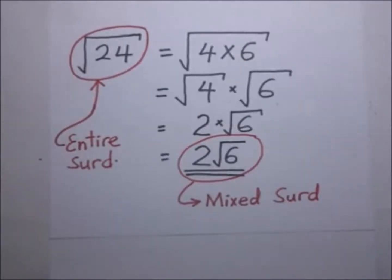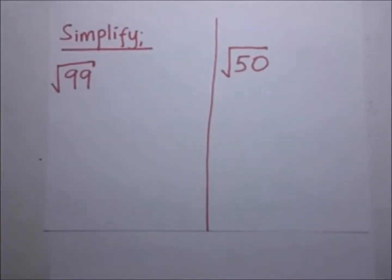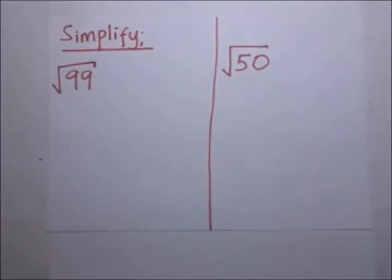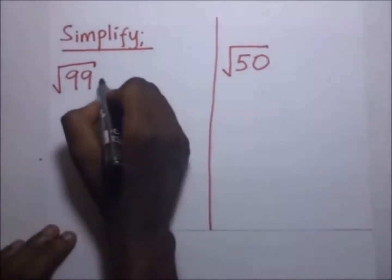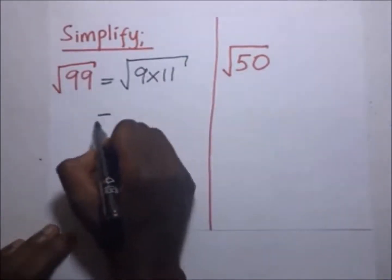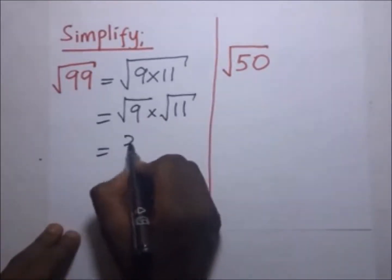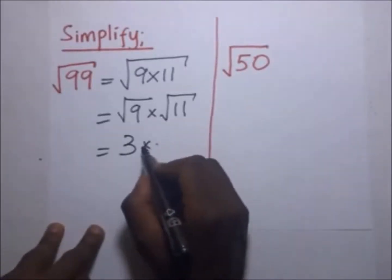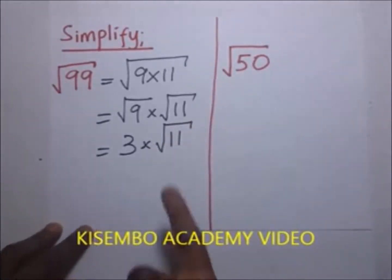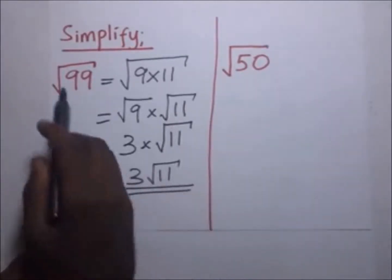Let's simplify some surds for illustration. We have the square root of 99. To simplify, we identify two factors of 99 where one gives a direct square root. This is the same as the square root of 9 times 11, since 9×11=99. This equals the square root of 9 times the square root of 11. The square root of 9 is 3, so it's 3 times the square root of 11.